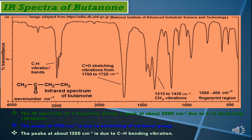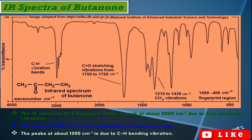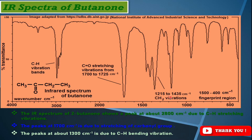In this region again you can see carbon-hydrogen vibration bands, which are very close to 3000 cm⁻¹ but actually slightly below 3000 cm⁻¹. These are the C-H stretching vibrations, which are typical. Between 1215 and 1435 cm⁻¹ is the methylene group vibration, due to the CH₂ bending vibration.